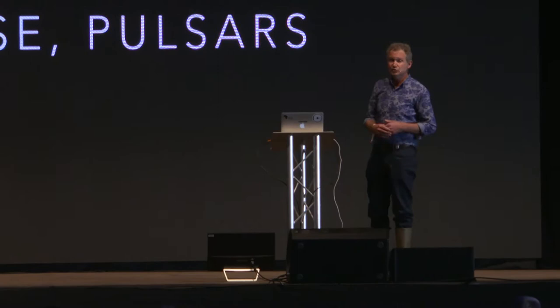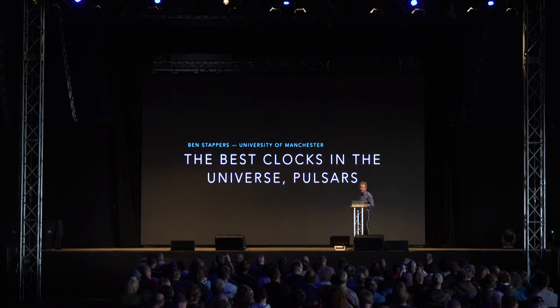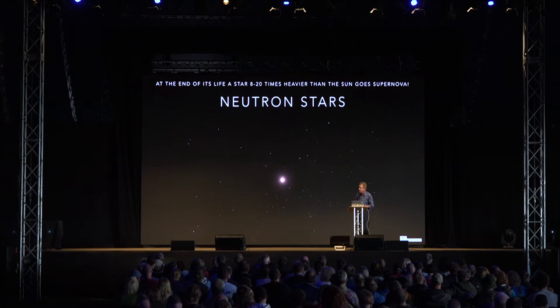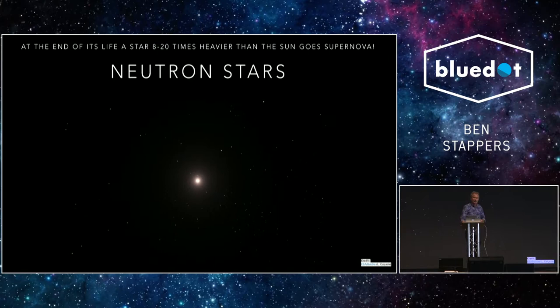As I'll introduce to you shortly, the first exoplanets we knew about - so that's planets outside of our solar system - were actually found orbiting pulsars, and we'll show you how that was done. So neutron stars are the objects that remain after a star which weighs around about 8 to 20 times the mass of the sun goes supernova, and basically what that means is that a star of that mass, when it runs out of fuel, it collapses in on itself.